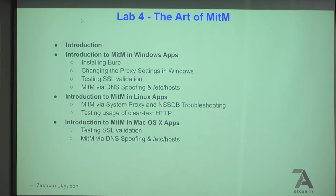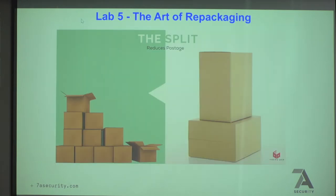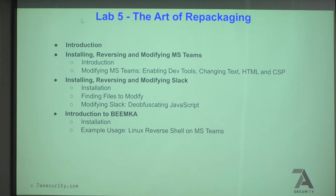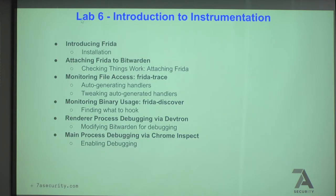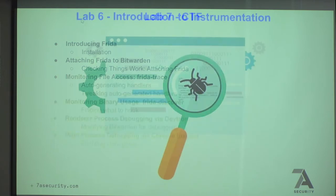We won't cover these today, but to mention them: you should always man-in-the-middle desktop applications - there are a few techniques for that. Repackaging is an interesting technique applicable to both mobile and desktop apps. With Electron it's especially easy - you can reverse the application, change the JavaScript, add debug statements to see how they're doing their crypto. With instrumentation you can also see what the application is doing at runtime.